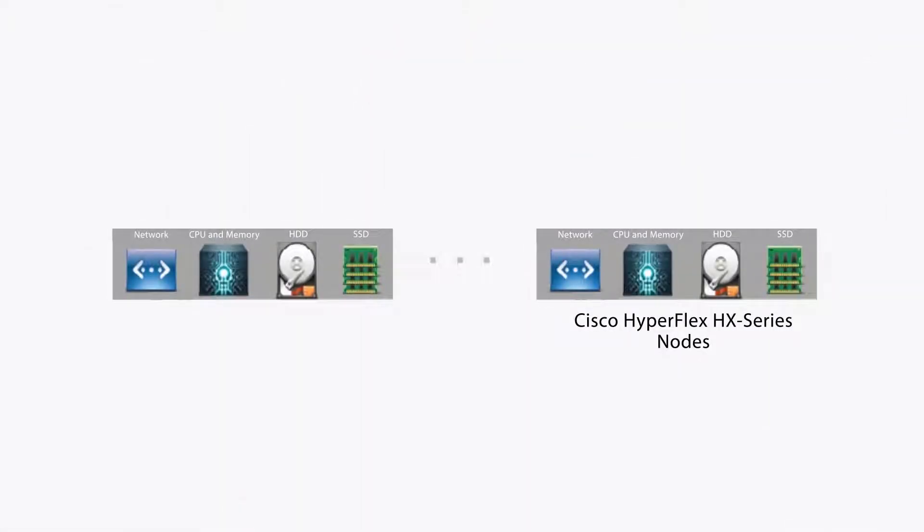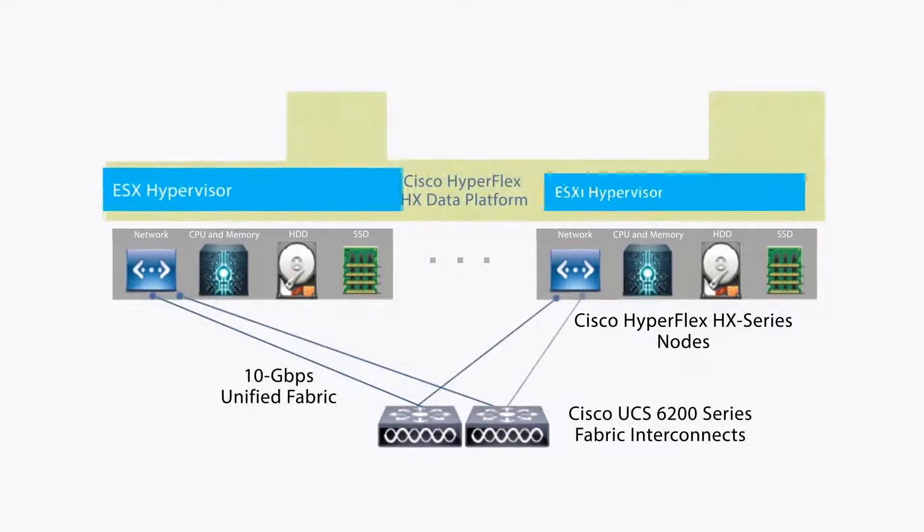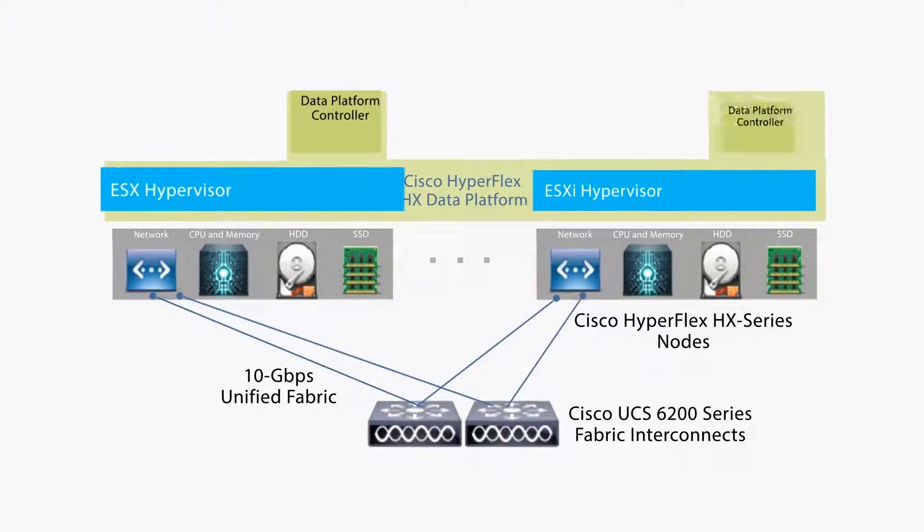Here at Veeam Software we have a slogan when working with our global strategic alliances: we're better together. It's not just a catchy saying, but something we truly believe. The case of Cisco HyperFlex when combined with Veeam Availability Suite is a great example of this. HyperFlex is Cisco's software-defined hyperconverged solution that combines UCS compute, storage, and networking resources.